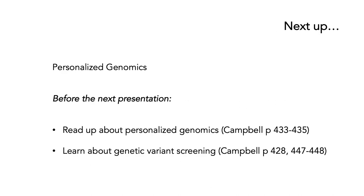Next up, we're going to have a presentation on personalised genomics, where we put a lot of these ideas together into a single whole. Before the next presentation, if you've got the book, read up about personalised genomics on pages 433 to 435. Learn about genetic variant screening on page 428, and also pages 447 to 448. If you don't have the textbook, look up these topics online. Otherwise, we'll talk about them in the next and last presentation on personalised genomics.